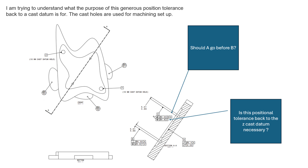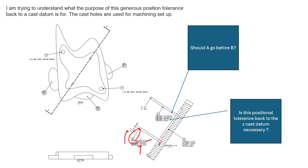A couple things I'm going to point out that aren't legal: we can't attach feature control frames to the datum feature symbol to identify these controls. Although the intent may be obvious to the interpreter, the standard does not allow this — we would have to have a leader arrow to the surface itself or attach it to the feature of size. Additionally, if this parallelism is being called back to datum A and this surface is also being identified as datum feature A, we can't control parallelism back to ourselves — that feature control frame would be null and void. We can certainly have flatness instead.